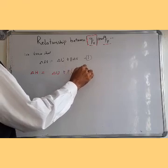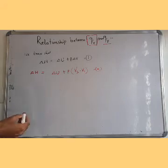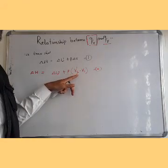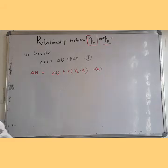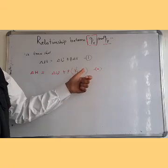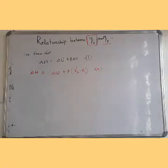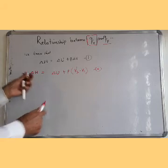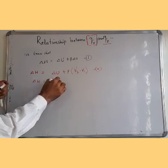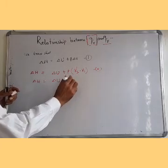Here ΔV equals V2 minus V1, where V2 is the volume of the system in the final state — that is, the final volume — and V1 is the initial volume. So the equation simplifies to ΔH equals ΔU plus PV2 minus PV1, which is equation 3.